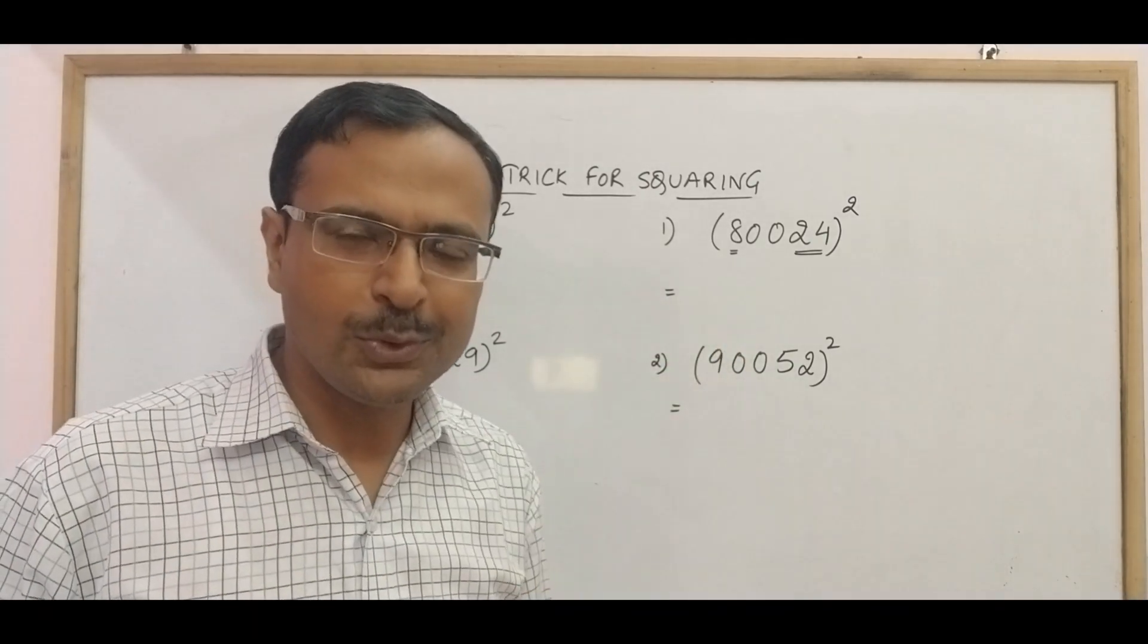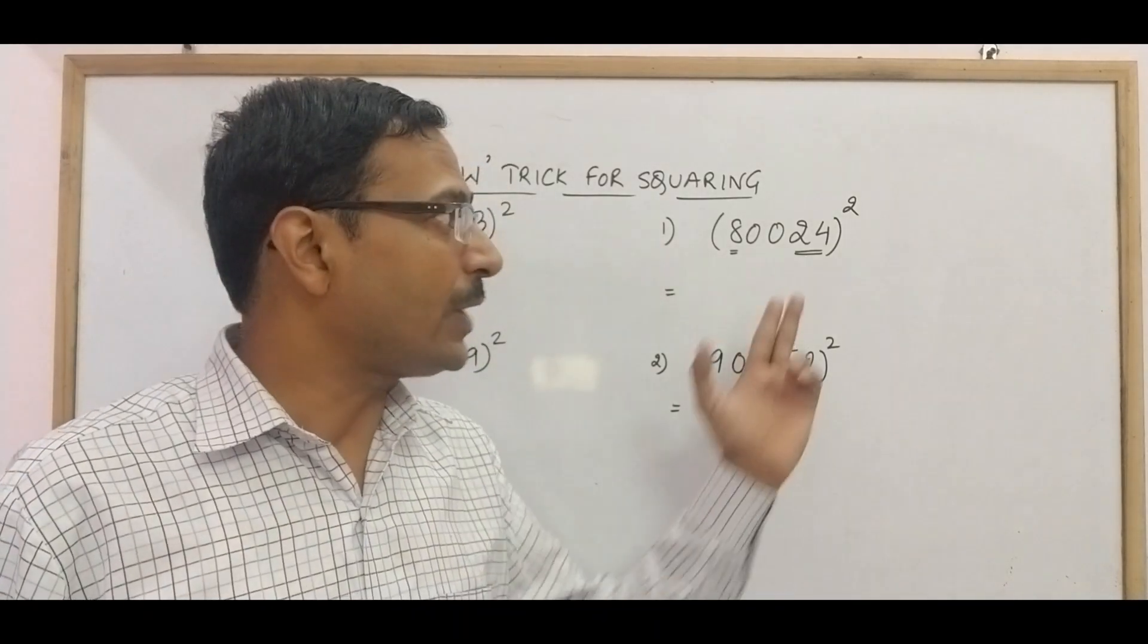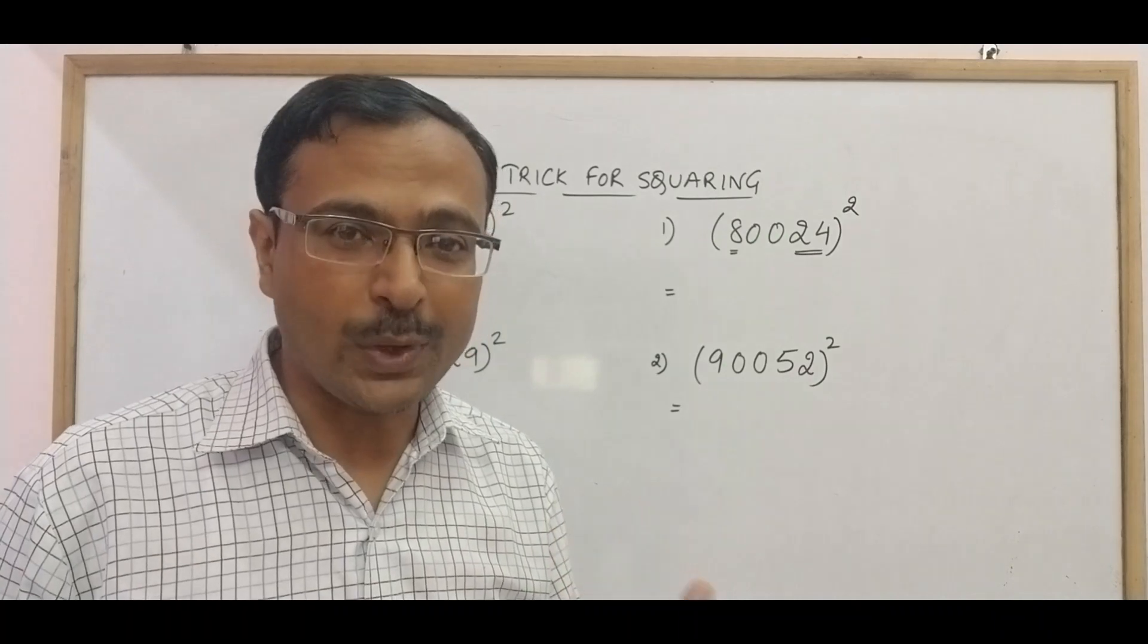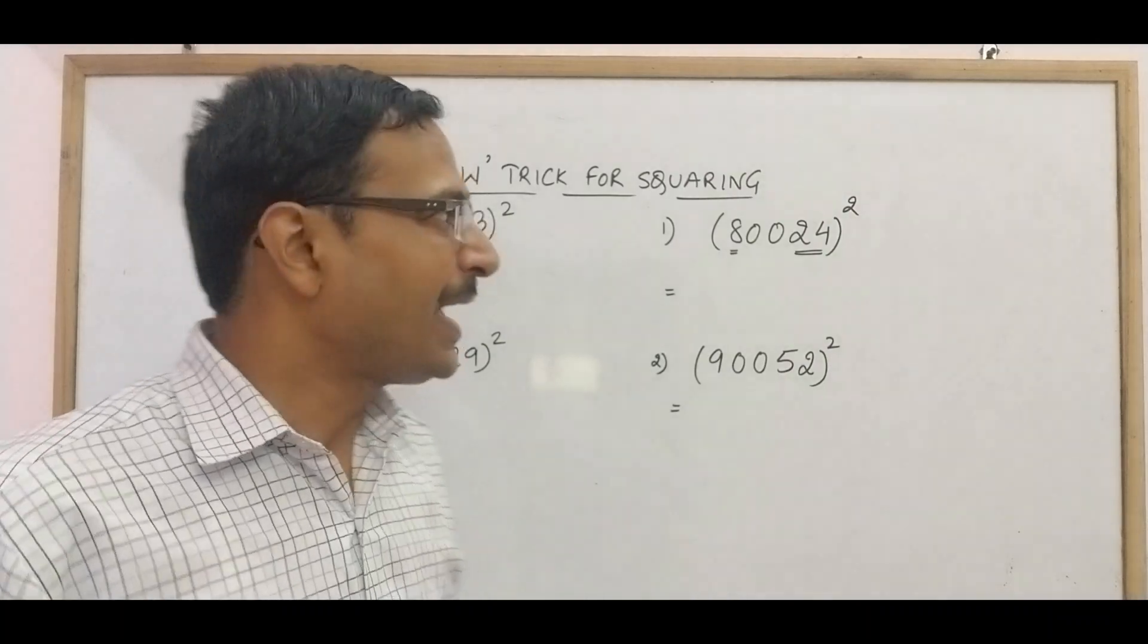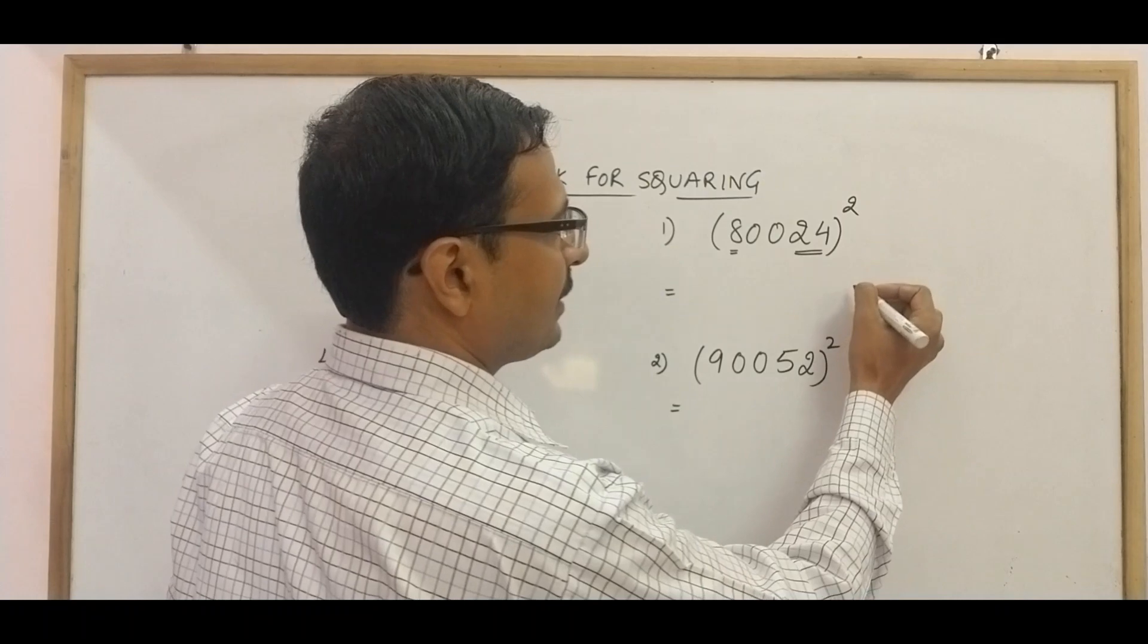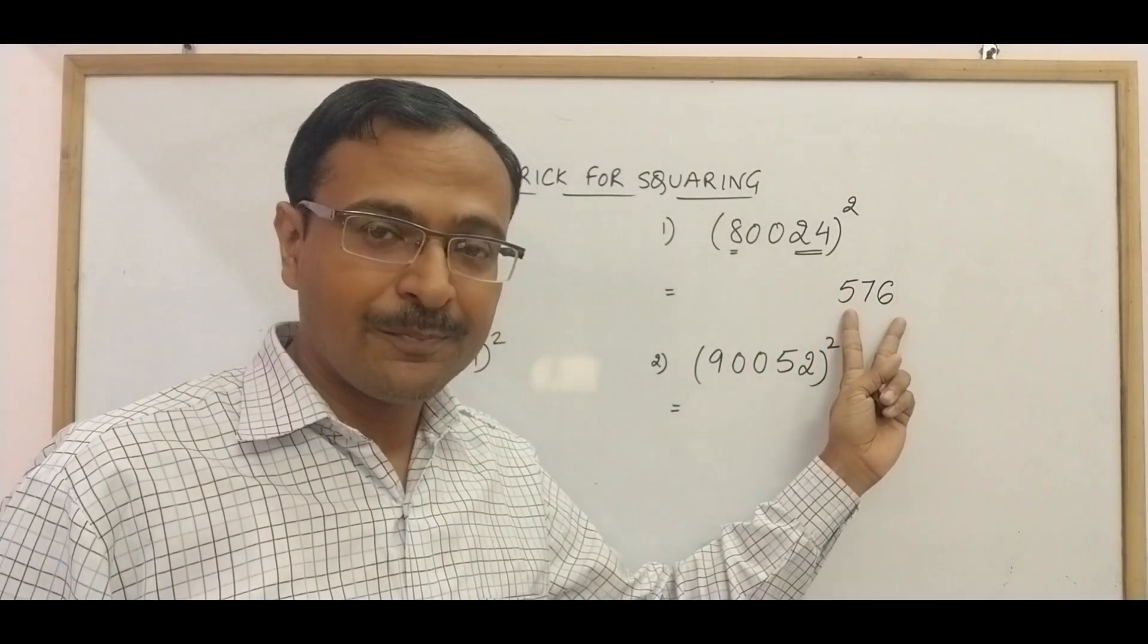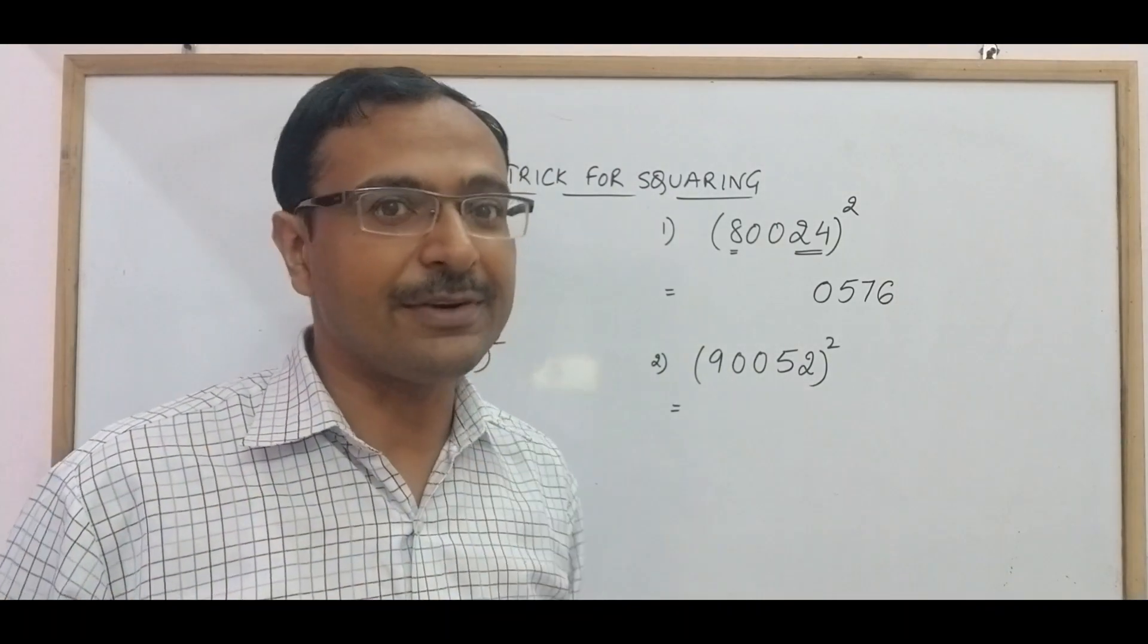Square of 8 is already known to you. Even if you don't know the square of 24, you can go for the vertically and crosswise method of finding the square of this particular number 24. What am I going to do is, I am going to square this number 24. I know that the square of this number 24 is 576. Now once I get a three digit number as the square, I will prefix one zero because I need a four digit number in the first step.